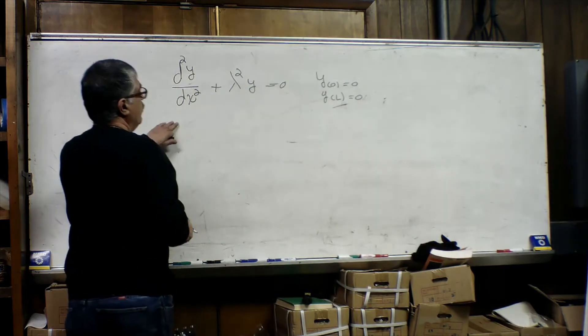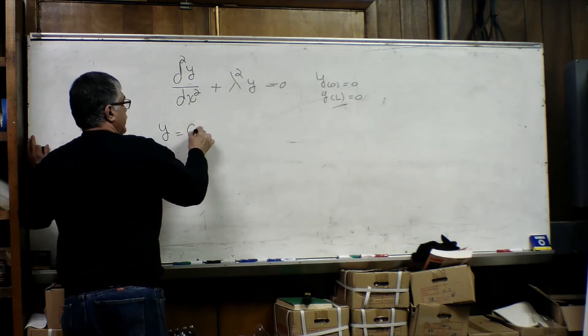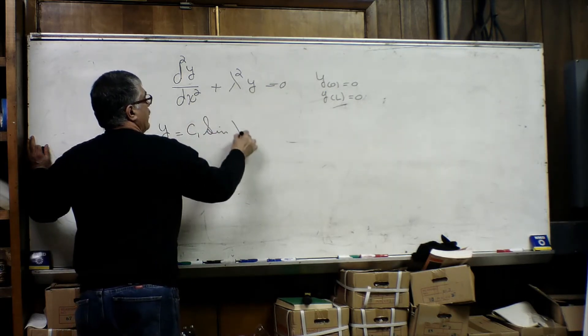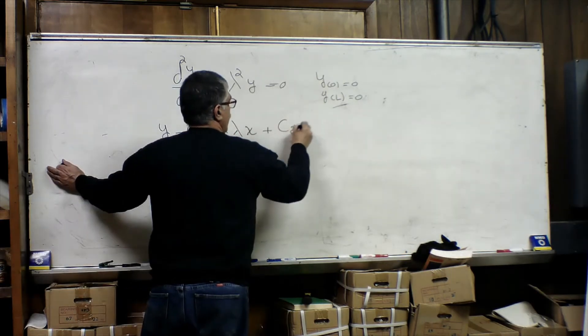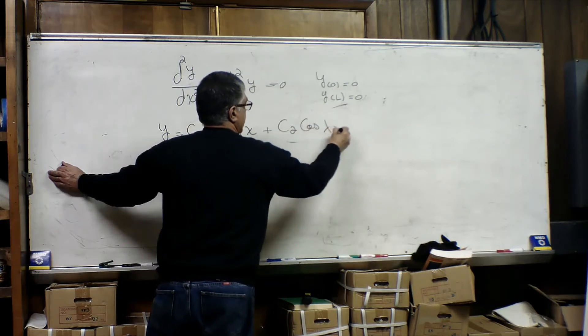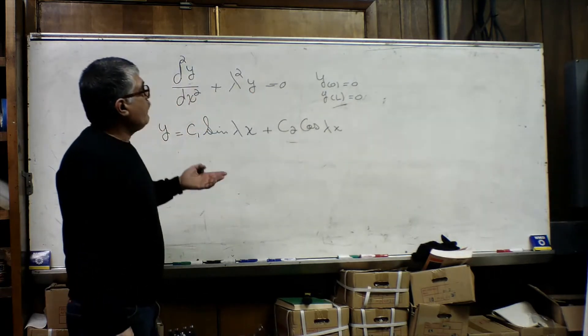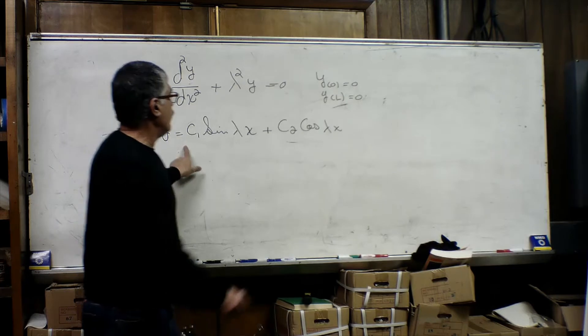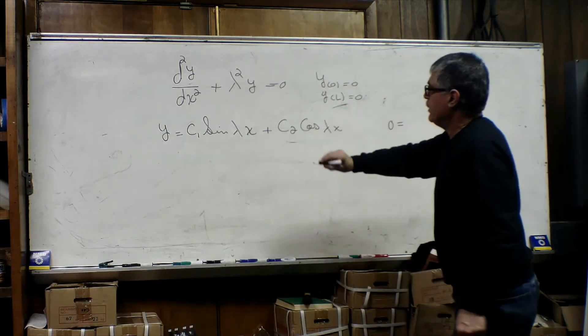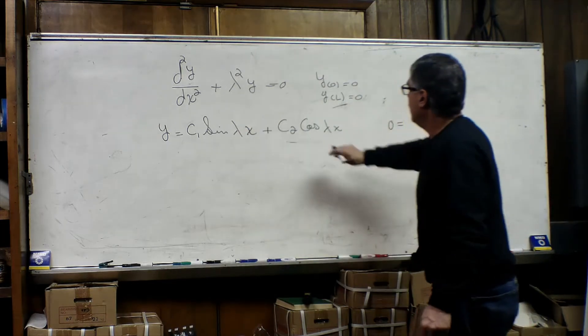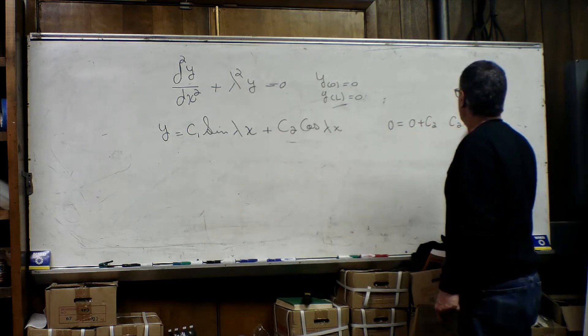The solution to this problem will be y equals c1 sine of lambda x plus c2 cosine of lambda x. Now, if we apply the first condition, y when x equals 0 is equal to 0, then y will be equal to 0 when x is equal to 0. That means this portion will be 0, and this portion will be c2. So c2 will be equal to 0.